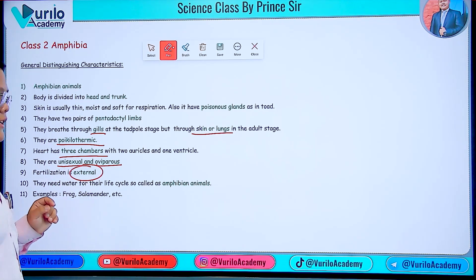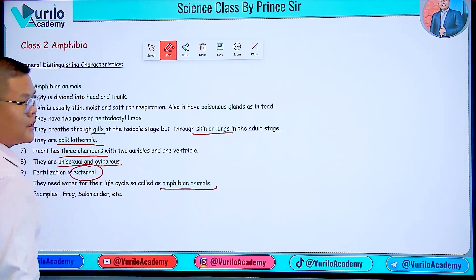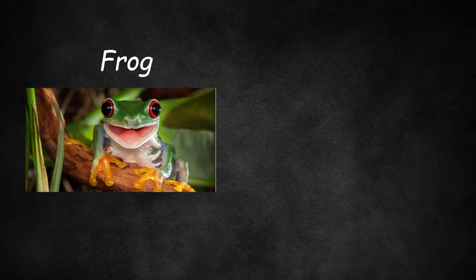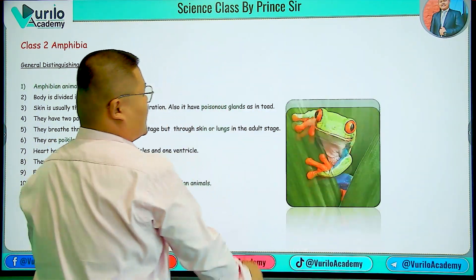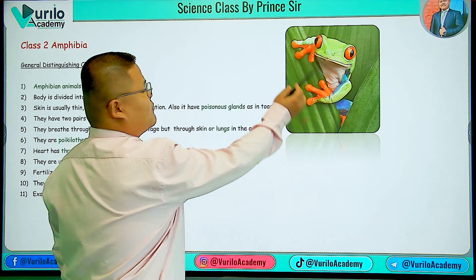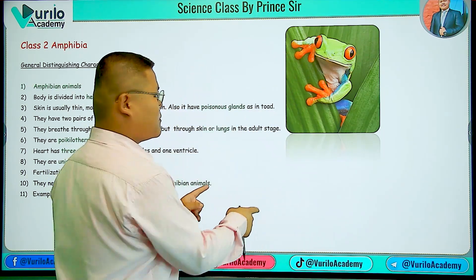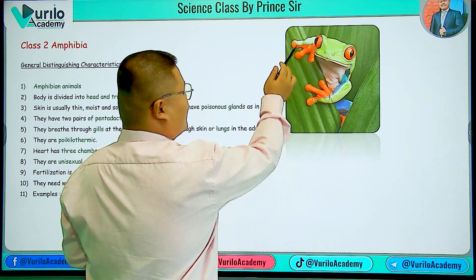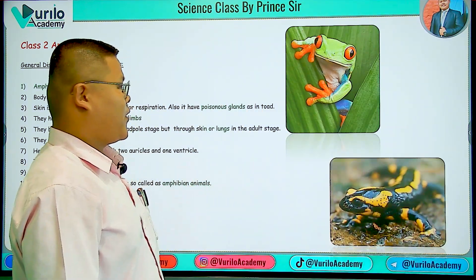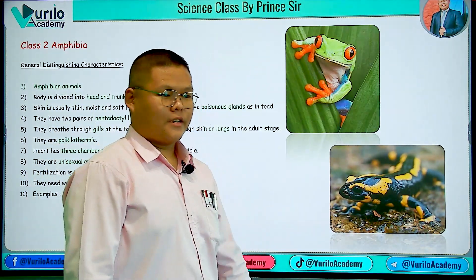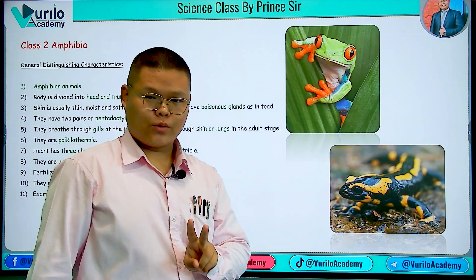They need water for their life cycle, which is why they are called amphibian animals. Examples include frog and salamander. We can also see pictures of a frog and a salamander. With this, we have completed Class 2 Amphibia.